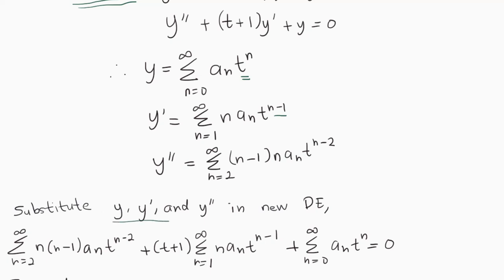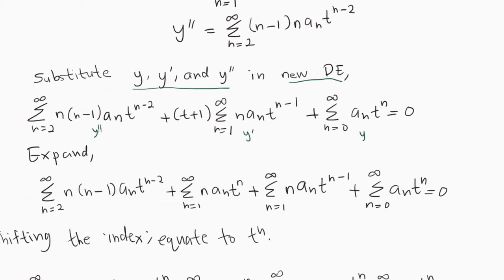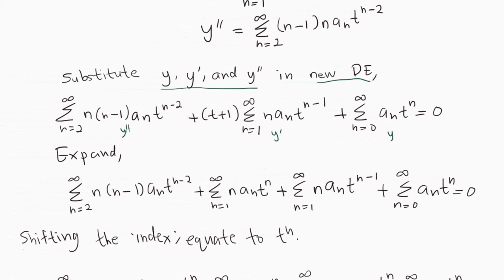We substitute y, y', and y'' into the new DE. Expanding the equation, the first term is unchanged. For (t+1)·y', expanding gives Σ(n=1 to ∞) n·aₙ·t^n — because t multiplied by t^(n-1) gives t^n — plus Σ(n=1 to ∞) n·aₙ·t^(n-1), with nothing changing for the power when multiplied by 1. The last term is y = Σ aₙ tⁿ, rewritten as is.